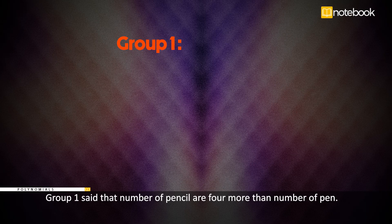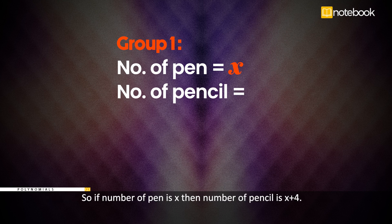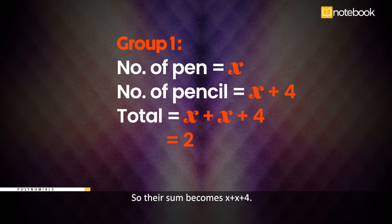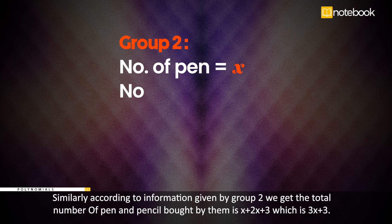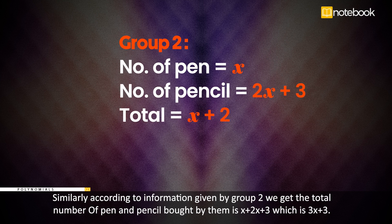Group 1 said that the number of pencils are four more than the number of pens. So if the number of pens is x, then the number of pencils is x + 4, so their sum becomes x + (x + 4), which is 2x + 4. Similarly, according to the information given by group 2, the total number of pens and pencils bought by them is x + (2x + 3), which is 3x + 3.